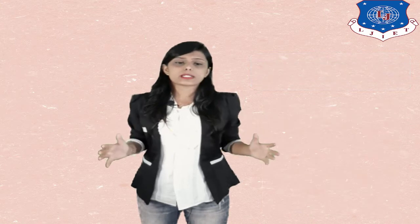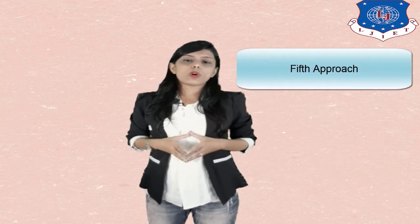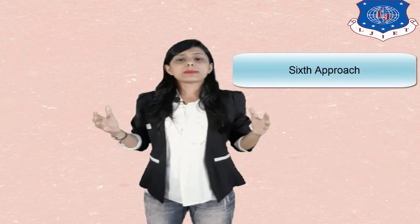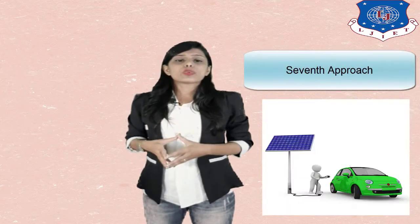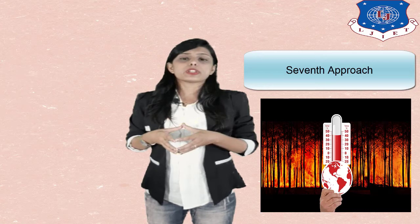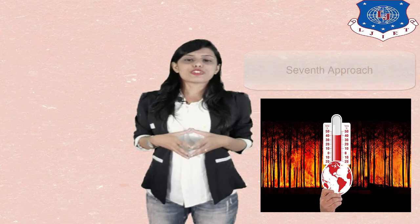The second approach is reduction in nitrous oxide emissions by minimizing the use of nitrogen fertilizer in agriculture. The third approach is increasing vegetation cover, particularly forests, as they act as sinks for CO2 absorption. The fourth approach is phasing out chlorofluorocarbons and developing their substitutes. The fifth approach is trapping and using methane as a fuel. The sixth approach is stabilizing population growth. The last approach is using energy resources judicially, which will help in decreasing the temperature of the earth. Thank you for watching this video.